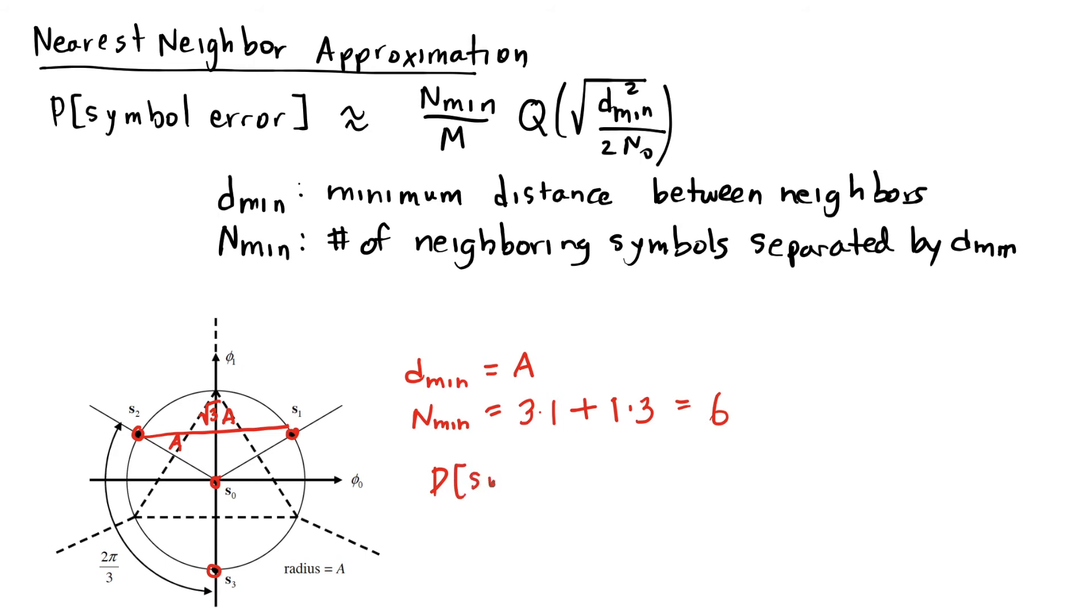So I'm going to write the probability of symbol error using the nearest neighbor approximation as 6 divided by 4, because m equals 4, times the Q function of the square root of a squared divided by N0,